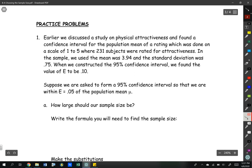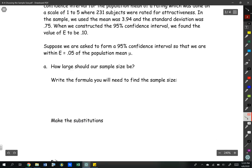Let's take a look at our first problem. Earlier we discussed a study on physical attractiveness, and we found a confidence interval for the population mean of a rating on a scale of 1 to 5, where 231 subjects were rated for attractiveness. In the sample, we used a mean of 3.94 and a standard deviation of 0.75, and we constructed a 95% confidence interval where we found a value of E to be 0.10. Suppose we are asked to form a 95% confidence interval so that we are within 0.05 of the population mean. How large should our sample size be?